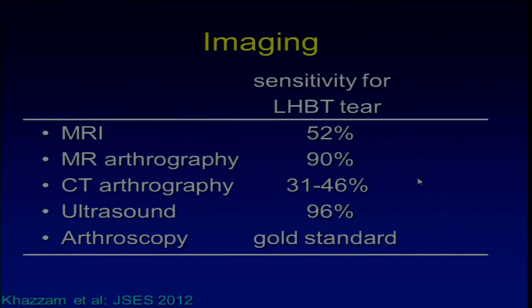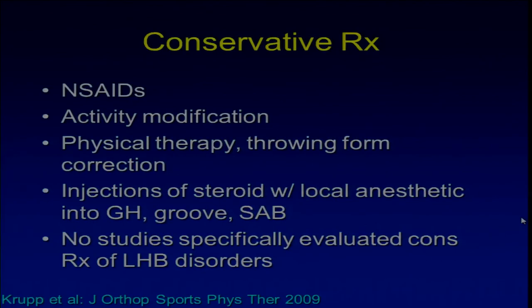Regarding imaging, arthroscopy is the gold standard, followed by ultrasound or MR arthrography, then CT arthrography and MRI. For treatment, conservative treatment should come first: NSAIDs, activity modification to avoid stress to the biceps, physical therapy, throwing mechanics correction, injection of steroid with local anesthetics into the glenohumeral joint or bicipital groove, or even subacromial bursa. However, no study has specifically evaluated conservative treatment of biceps disorders.